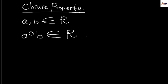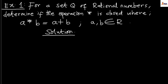But if the answer is also an element of set R, then we say the operation is closed under the set R. We'll now take examples. The very first example says: for a set Q of rational numbers, determine if the operation asterisk is closed, where A asterisk B equals A plus B, and A and B are elements of set Q.